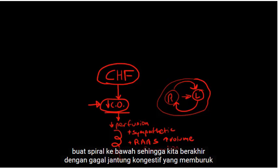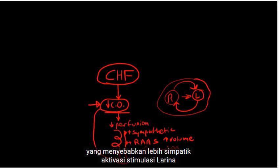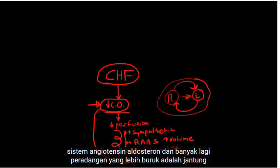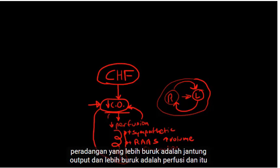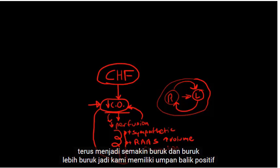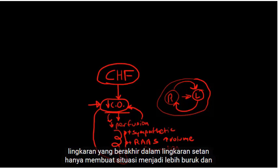All of these things work together to create a downward spiral. We end up with worsening congestive heart failure, which causes more sympathetic stimulation, activation of the renin-angiotensin-aldosterone system, and more inflammation, which worsens cardiac output and worsens perfusion — it just keeps getting worse. So we have a positive feedback loop that ends up in a vicious cycle, just making the situation worse and worse.